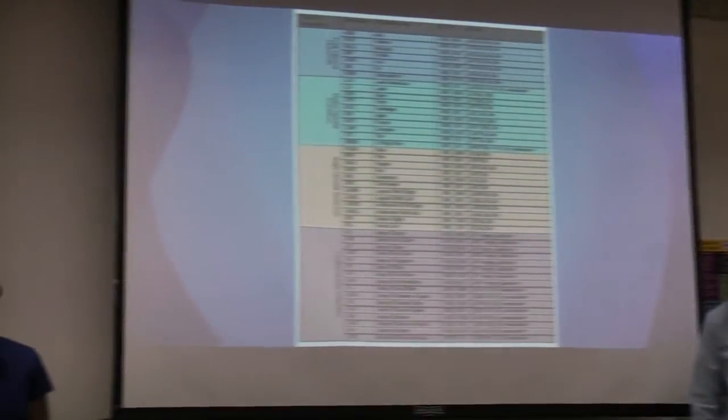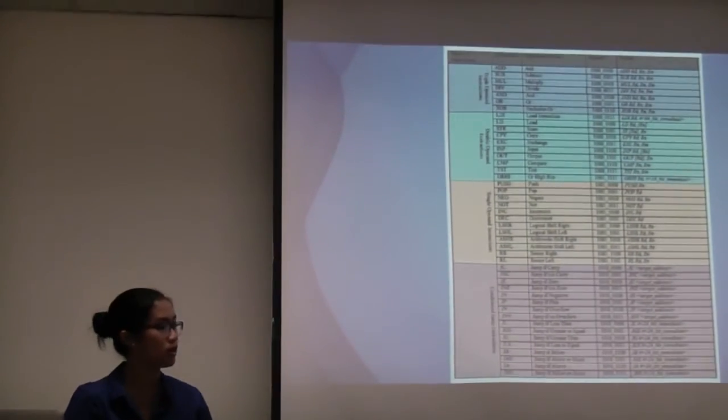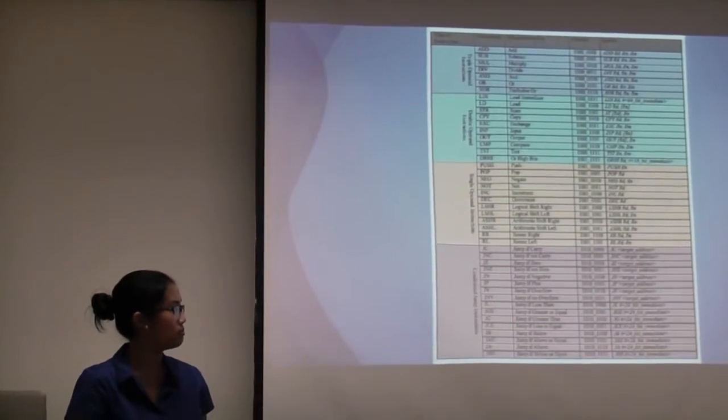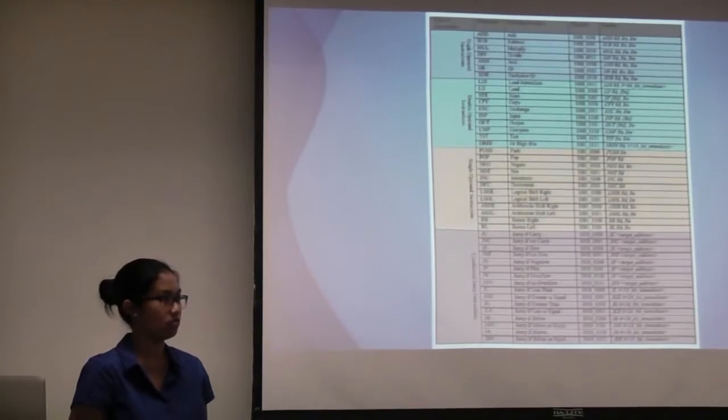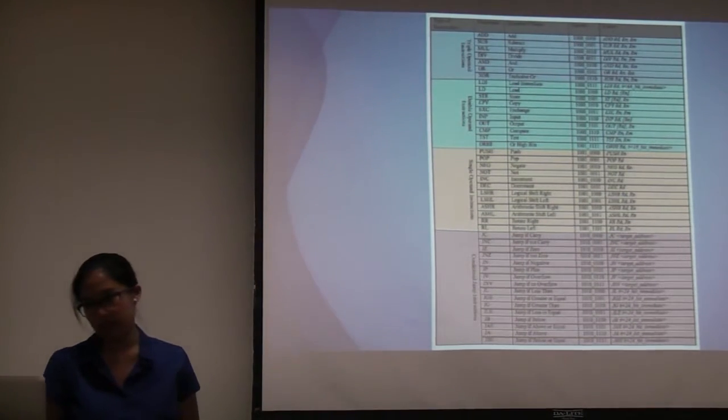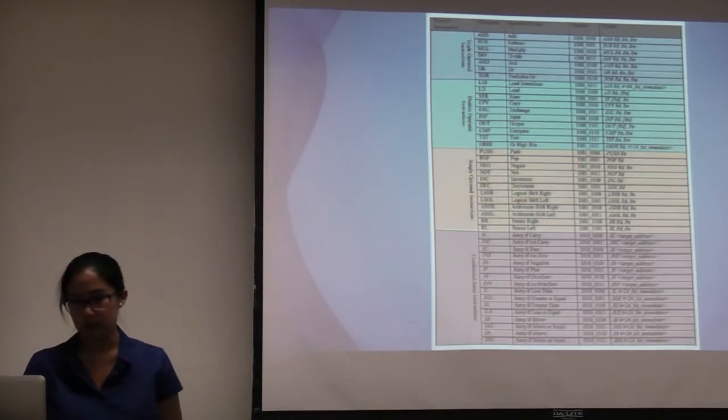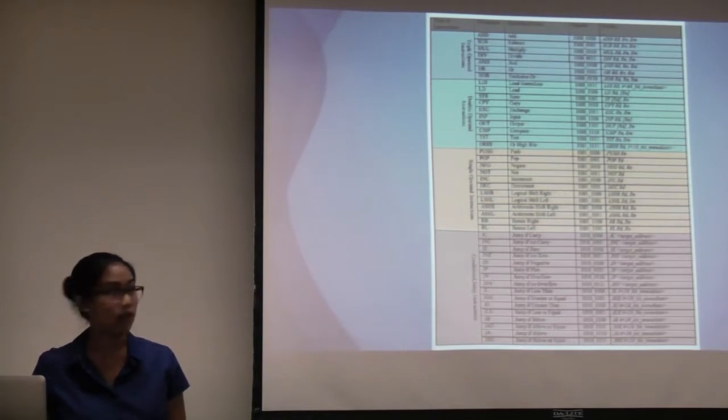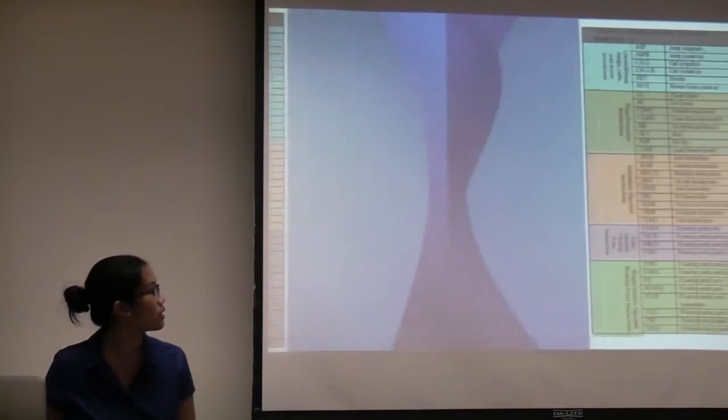So here we have the instructions that we've included for our processor. We haven't added any more instructions to the baseline instructions. So it's including all of the integer operations, the triple operand, double operand, and all of our jump instructions.